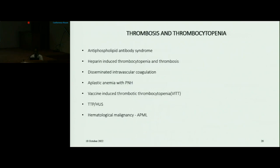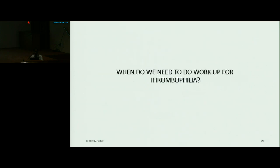Thrombosis and thrombocytopenia: the causes include antiphospholipid antibody syndrome, heparin-induced thrombocytopenia and thrombosis, disseminated intravascular coagulation, aplastic anemia with PNH, vaccine-induced thrombotic thrombocytopenia, TTP or HUS, or hematological malignancy, mainly APML.